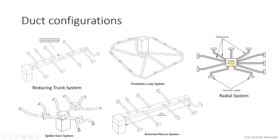Next we have the radial system. Here we don't have a main supply trunk. Directly from the supply plenum we have the branches. In the perimeter loop system there is a central supply plenum and through the feeder the air is supplied to the perimeter loop, and from there air is distributed. So these are the types of duct configurations.